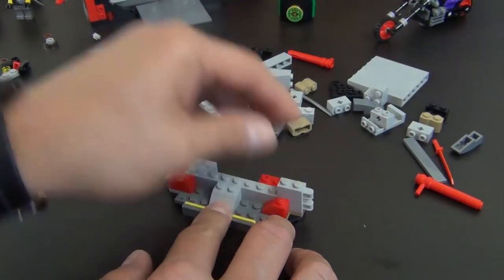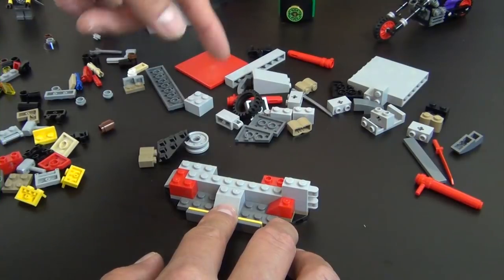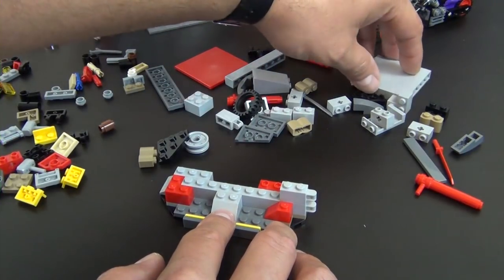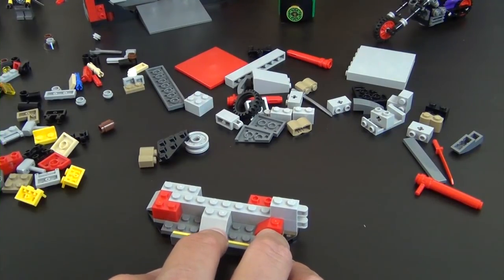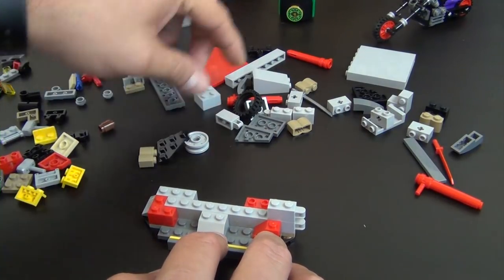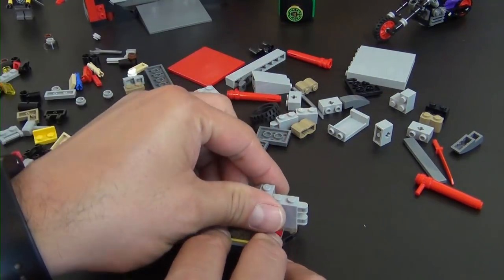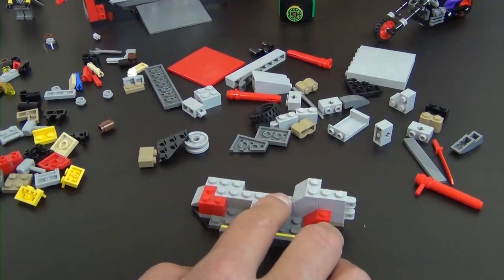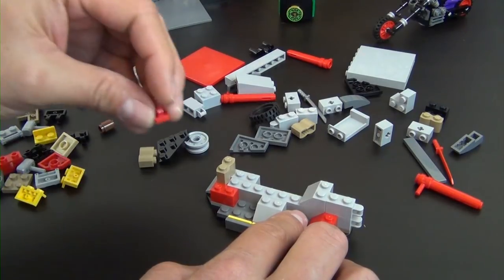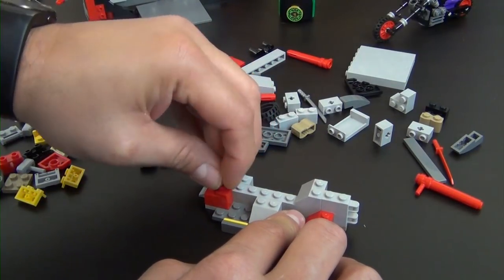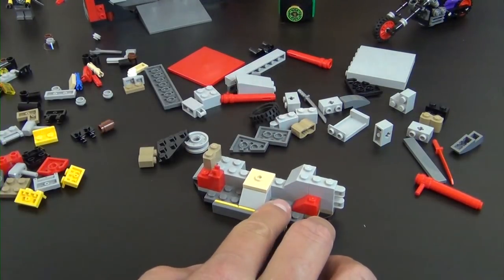I'll try to avoid that on this model, or this portion of the video. I'll try to avoid that on this model. And where's my slope? A gray slope. There it is, hiding under a tire. A single red clip there and then a tan jumper tile.